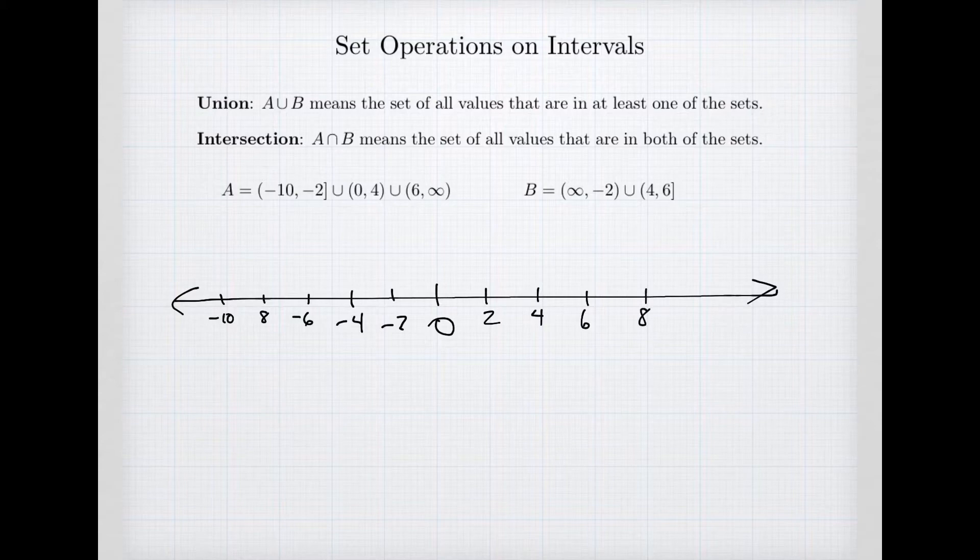All right, so there's some values on my number line and let's make our set A, let's do A in purple. All right, so the set A has an interval negative 10 to negative 2 and negative 2 is included so we'll fill that in, and that is our first interval of A. Then A has a second interval that goes from 0 to 4, and neither point is included so you leave them open. And our third set is 6 to infinity, so we start at 6 and we just go forever.